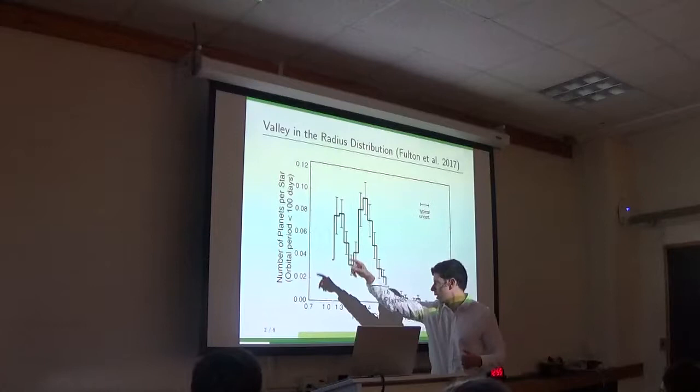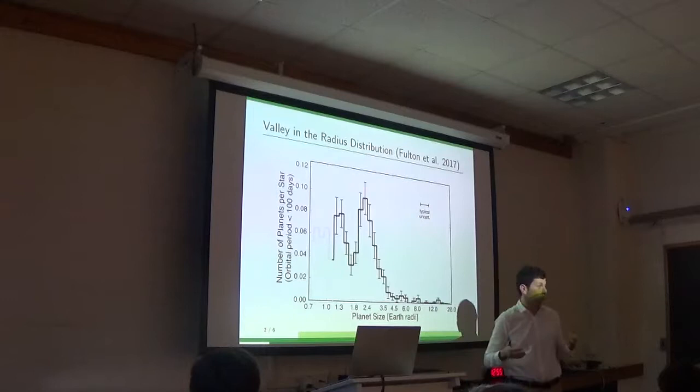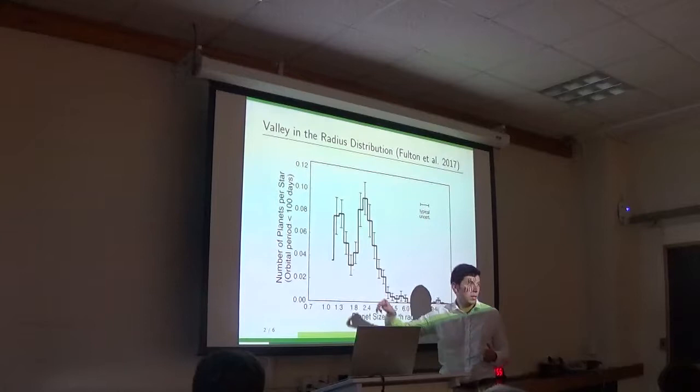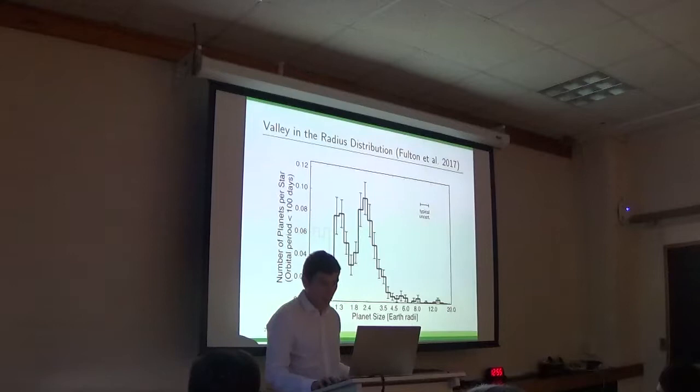So here, this is the distribution they got a few months ago. This is the number of planets as a function of the planet's radius in units of the Earth's radius. So first of all, you can see that most of these Kepler planets are relatively small, a few times the radius of the Earth. We already knew that. The new thing is that now you can see this distinct valley in the distribution. You can see that planets that are roughly twice the size of the Earth are significantly less common than both somewhat smaller and somewhat larger planets.